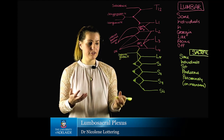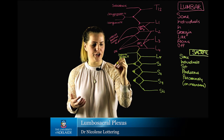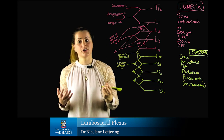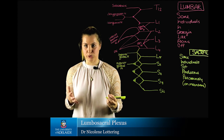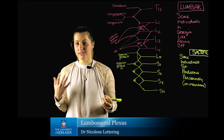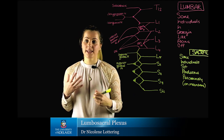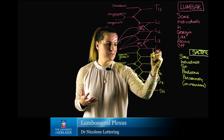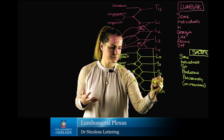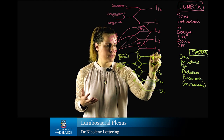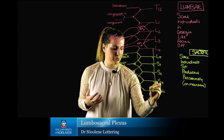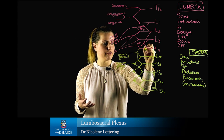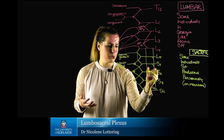The second nerve, our inferior gluteal nerve, is going to stem from our first mountain. 'S' in the mnemonic is then going to be our sciatic nerve, keeping in mind there are two branches: the tibial branch and the common fibular branch. The tibial branch originates from L4 all the way down to S3, while the common fibular branch originates from L4 down to S2.